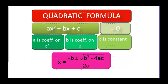So a is the coefficient on x squared — not the first term necessarily, it has to be the coefficient on x squared. And b is the coefficient on x, and c is always the constant. The quadratic formula — and I learned from one of my students several years ago that you could sing it to Pop Goes the Weasel — is x equals negative b plus or minus the square root of b squared minus 4ac, all over 2a.